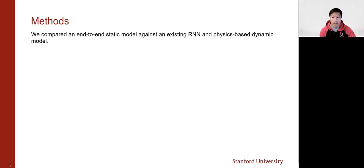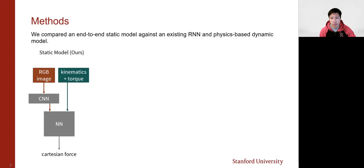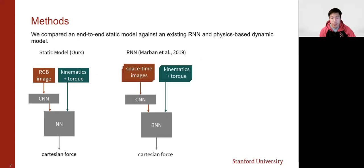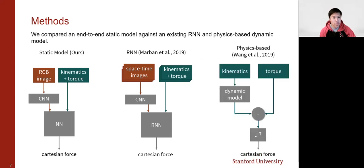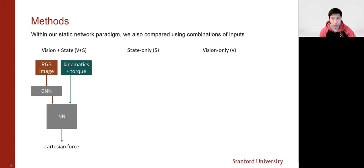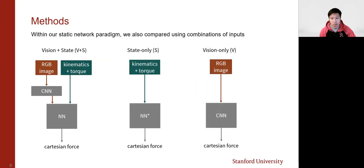To do this, we create a single time frame type network that uses RGB image and kinematic and torque inputs to estimate force. And we benchmark this against an existing recurrent neural network and an existing model-based method. We also looked at how the networks that use different inputs such as only the state input or only the vision input compared to the network that use both vision and state inputs.